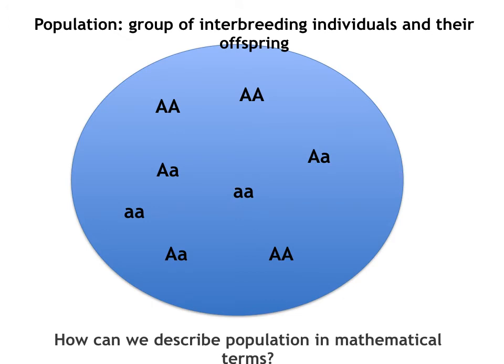The unit we are concerned with in population genetics is obviously the population. A population is a group of interbreeding individuals and their offspring. When we talk about populations, we generally also talk about geographical or physical limitations. Here in the blue circle we have a population of individuals, each represented by a genotype made up of two different alleles: big A and little a.